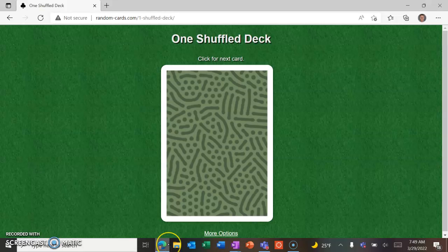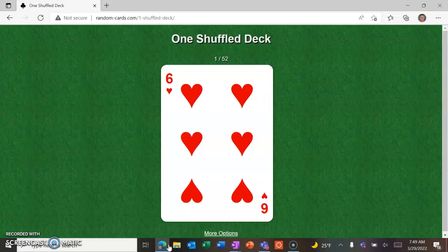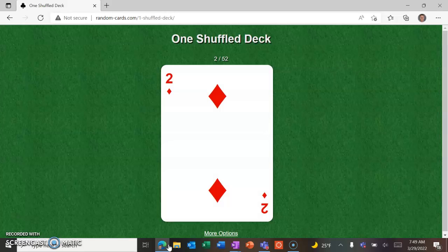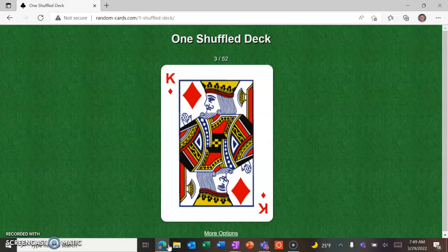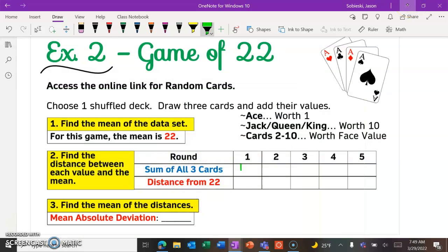It should look like this. And I am going to click the card three times. So I got a six plus a two, so that's eight, plus a king, so that's 10. So total, we had 18 for that. So that would go in my first box.